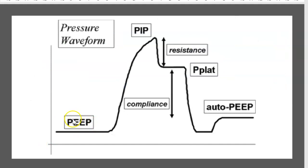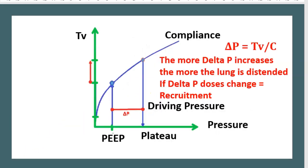This chart shows PIP (peak inspiratory pressure) and PEEP (positive end-expiratory pressure). We can measure resistance between PIP and plateau pressure. Plateau pressure is used to calculate compliance. The concept of driving pressure — delta P — involves PIP, pressure, and volume. Delta P equals tidal volume over compliance.